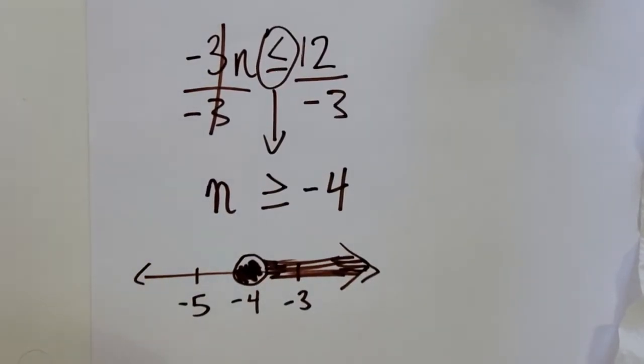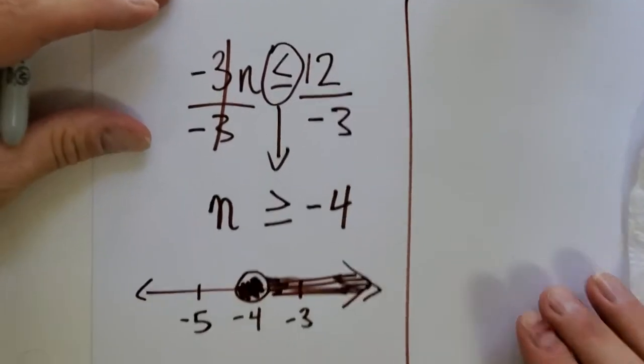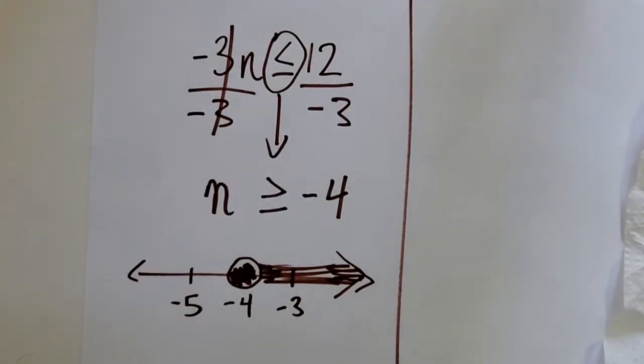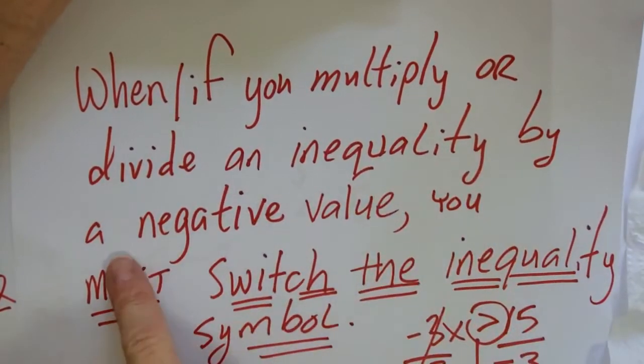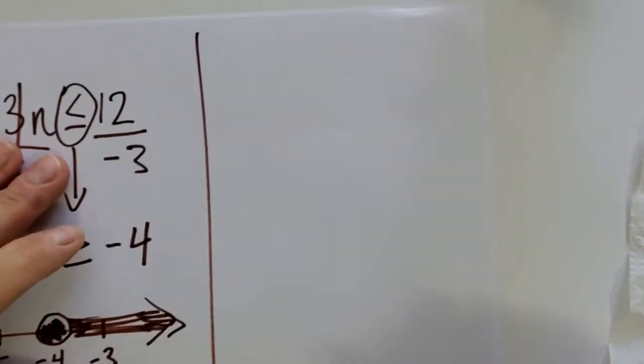There you have it. You're going to solve one-step multiplication, division inequalities just like you would an equation, but you have to watch, you have to check, you have to keep your eyes out for this rule. When you multiply or divide by a negative, you've got to flip the symbol. Not a positive.